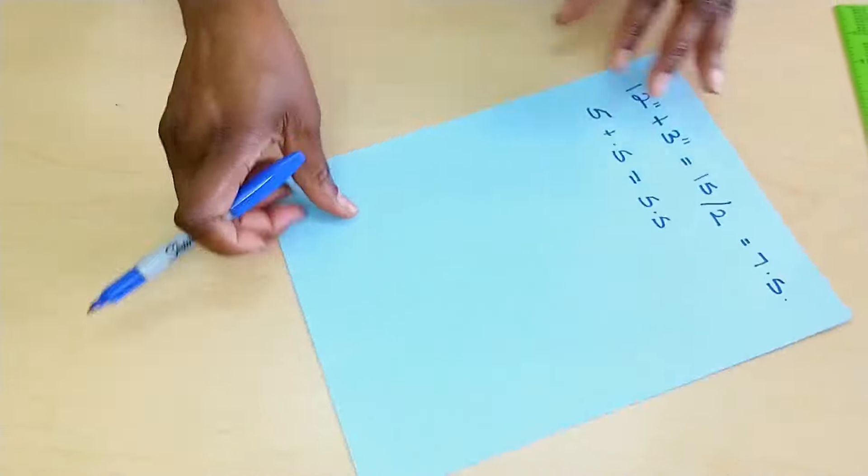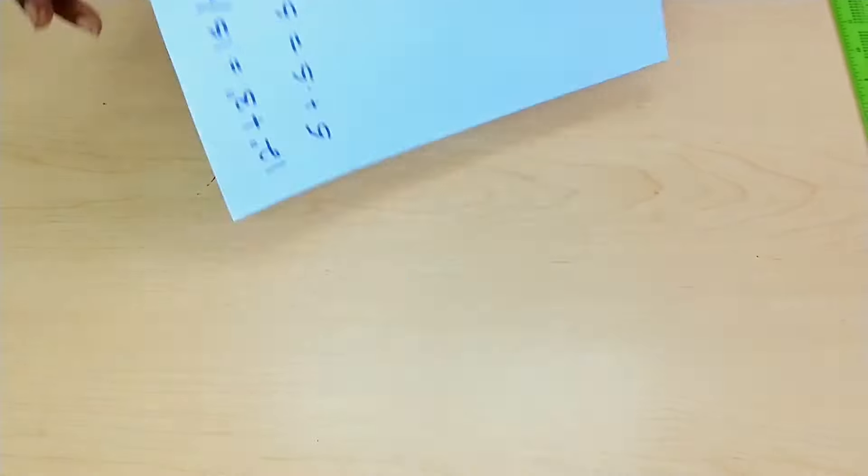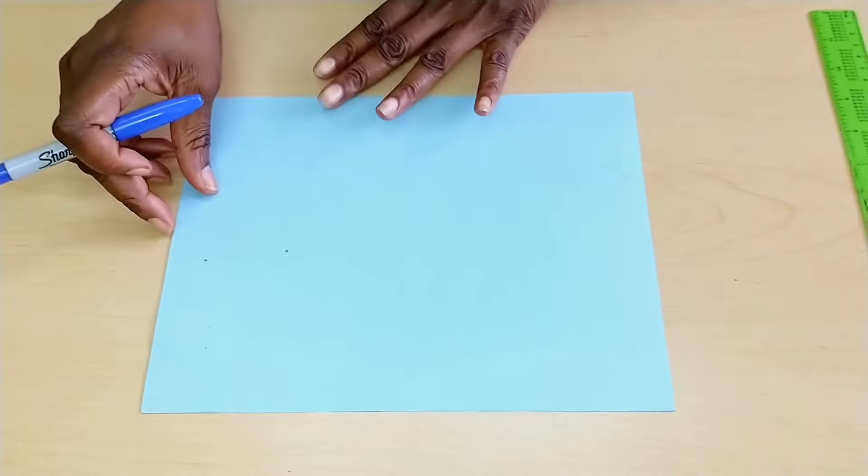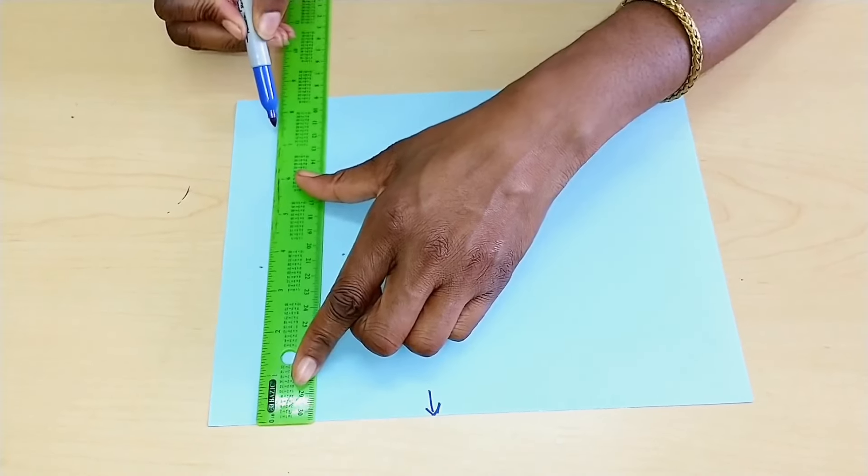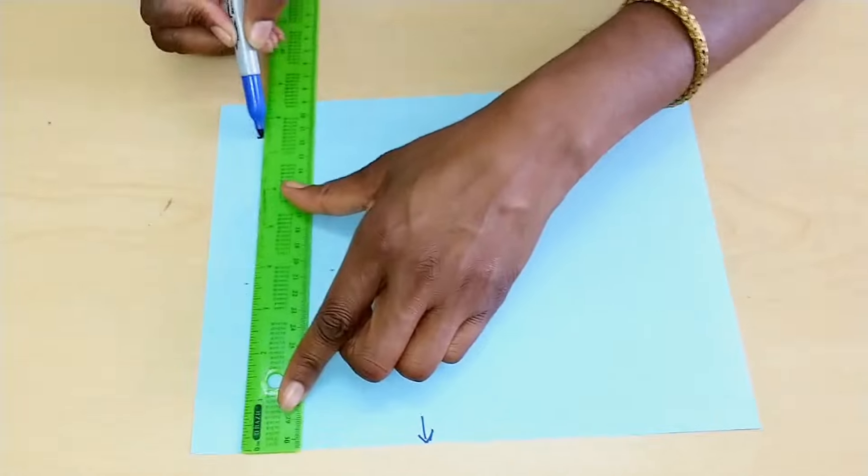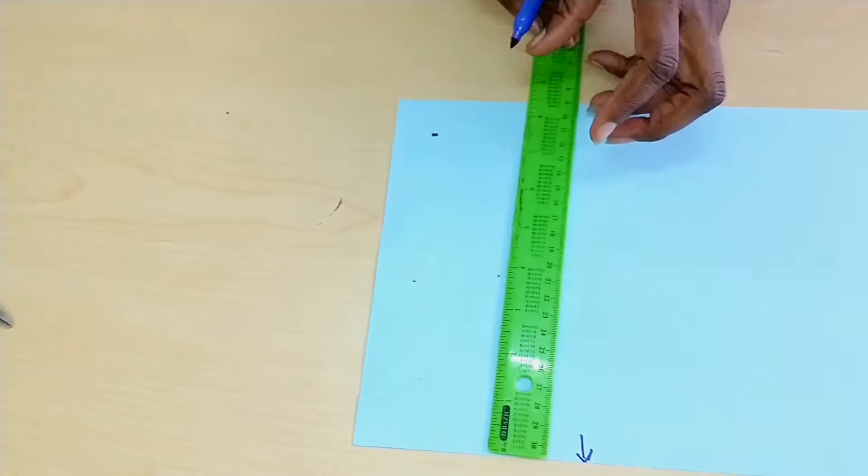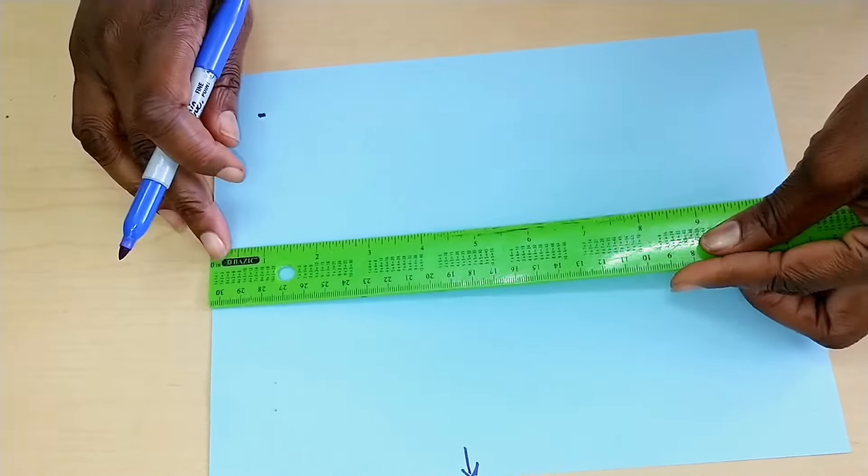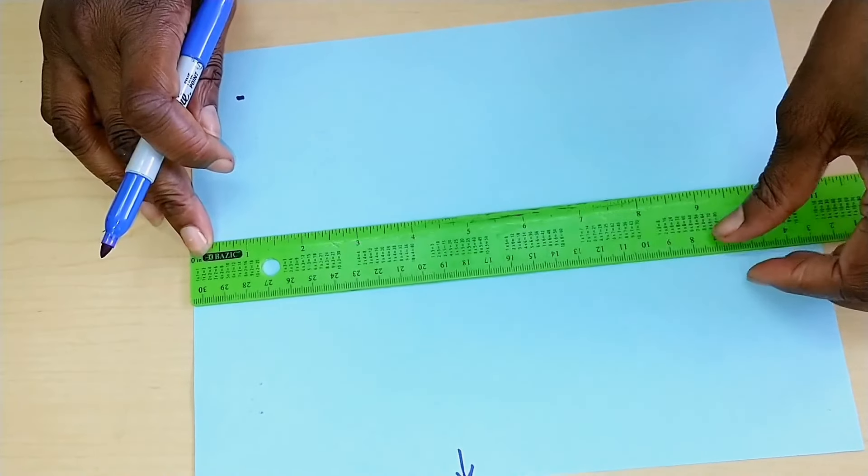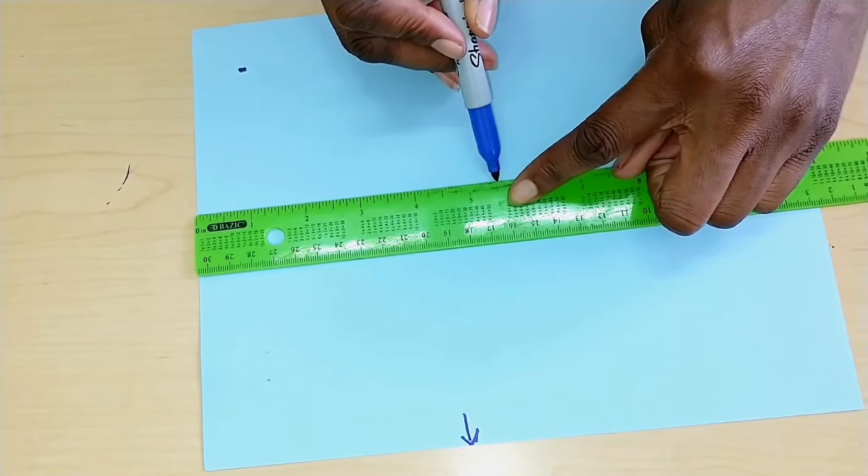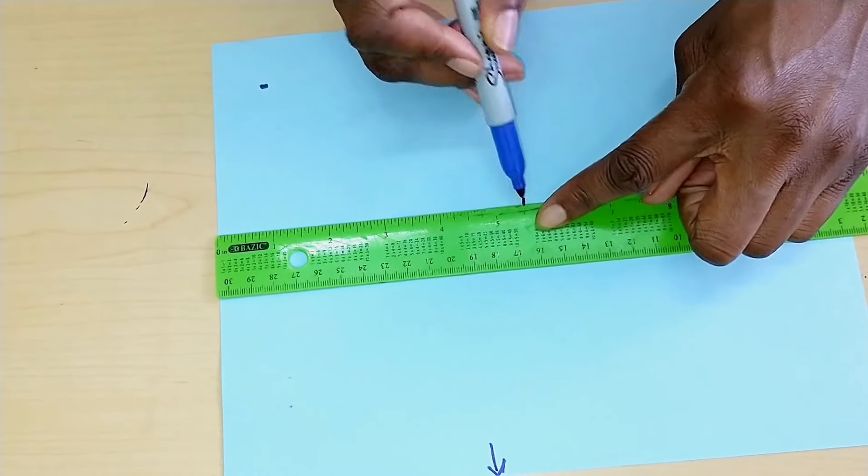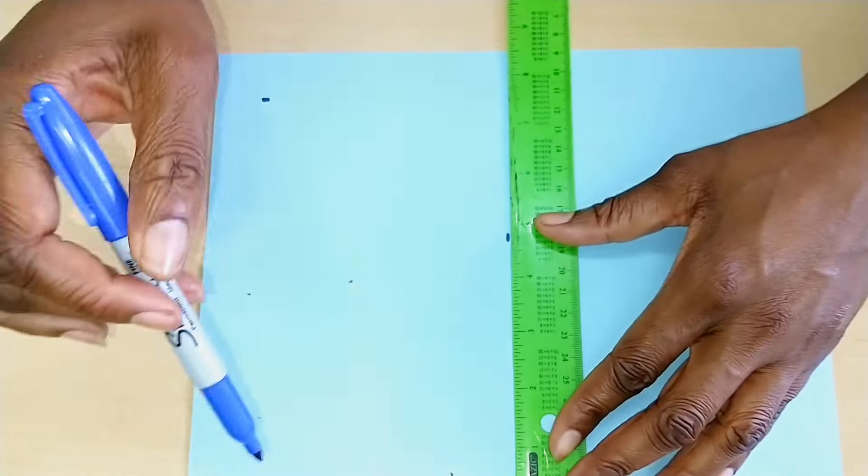Now that we have that, I am just going to flip my paper and I am going to work with this very same one. I will measure 7.5, so I am just putting a point where that is. Going downwards, and I am working with inches, I would have 5.5 inches. I am going to connect everything.